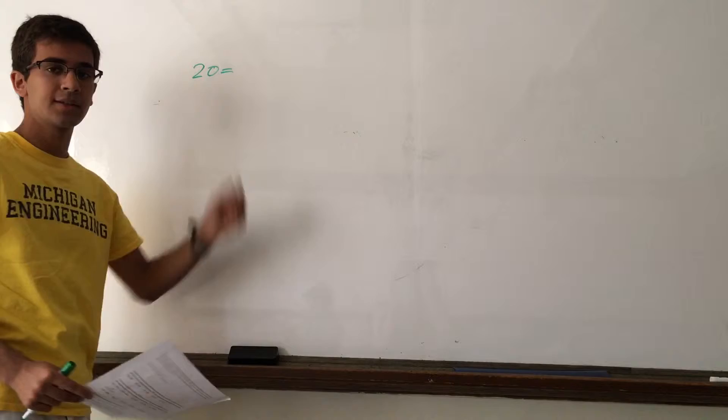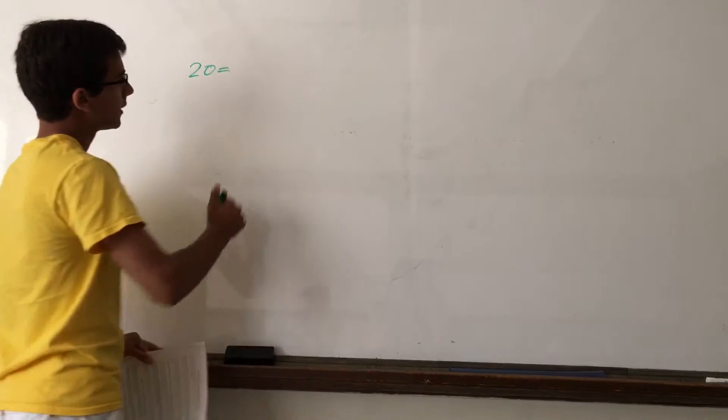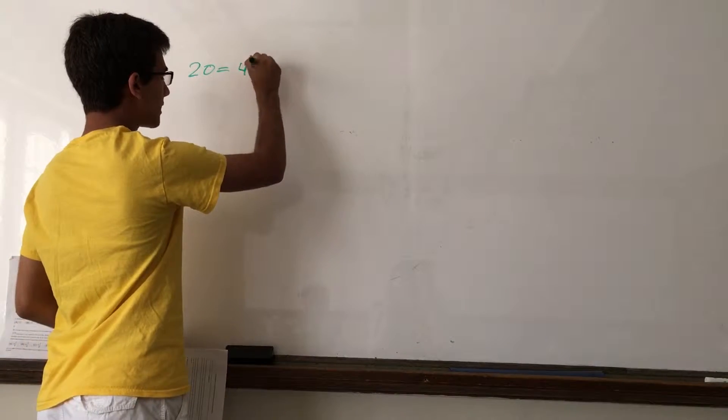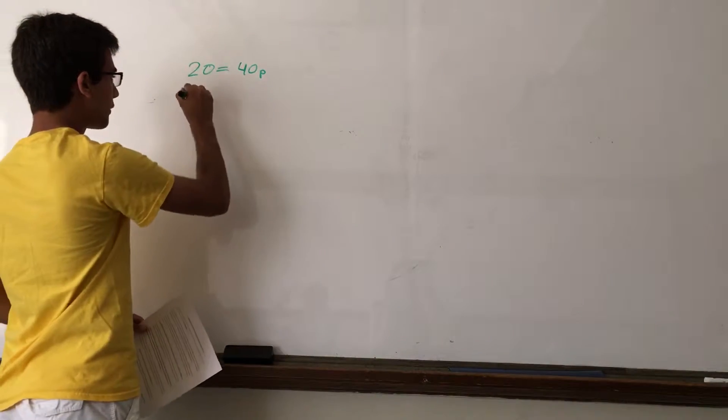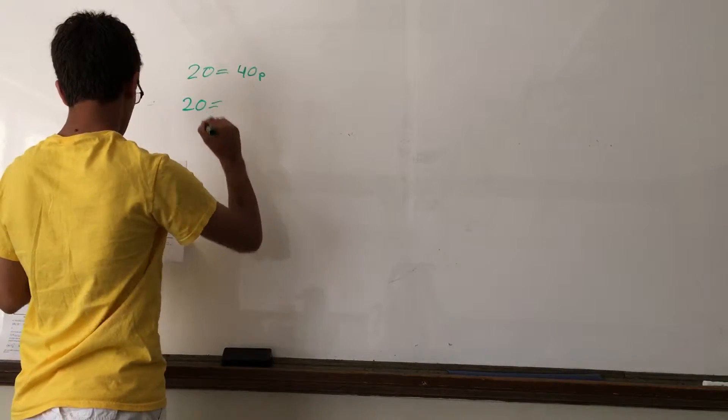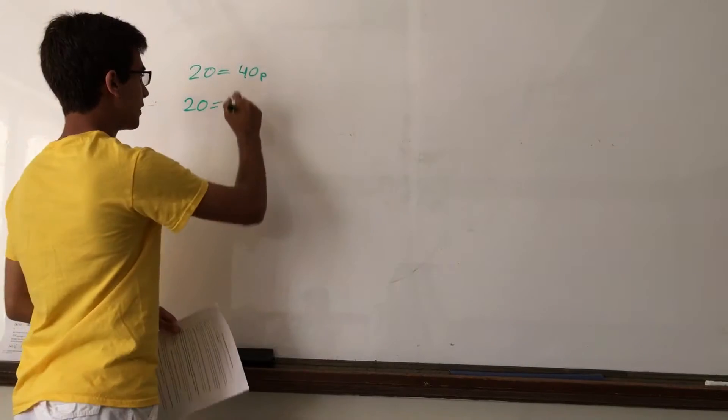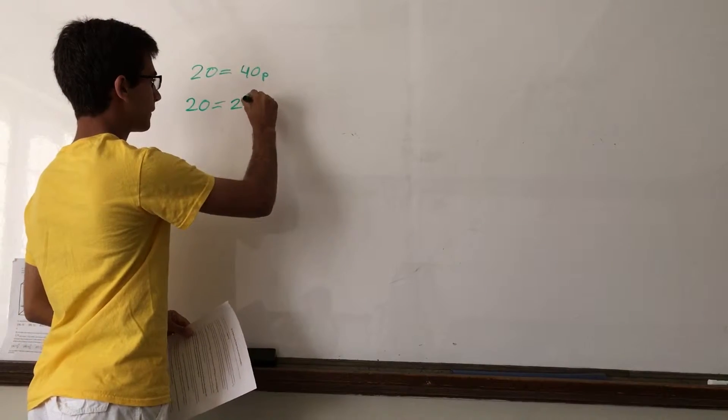We know that with these $20, he was able to buy 40 pencils, which means 40 times the price of a pencil must equal 20. Also with this $20, he was able to buy 25 erasers. So, 25E equals 20.